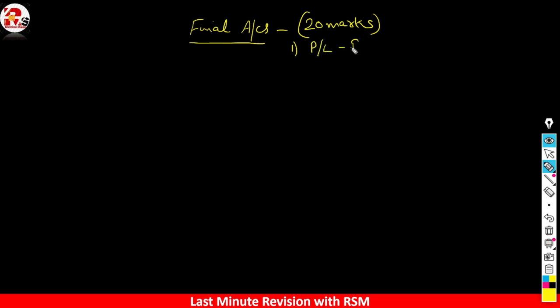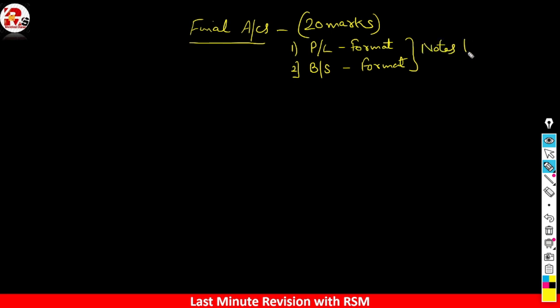First, you will create a format of Profit and Loss. Second, you need to prepare a Balance Sheet — you need to create a format of the Balance Sheet. After making both formats, you will have to create Notes to Accounts. You need to post all things in Notes to Accounts, and after posting, you will close it to the format of Profit and Loss. That is why this topic is quite time consuming.